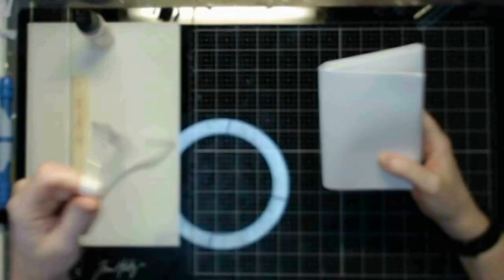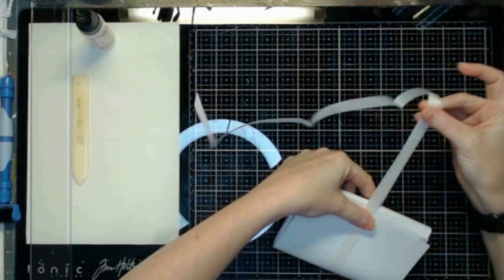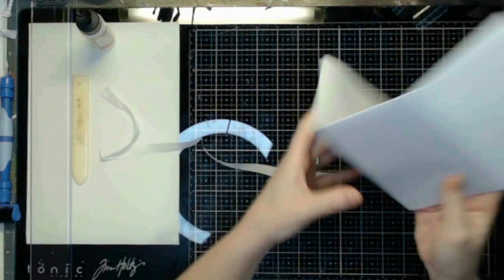So now I want to add my closure. And I am just going to use the seam binding, well part of the seam binding for this.